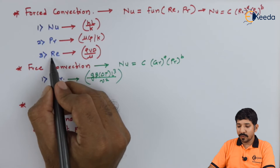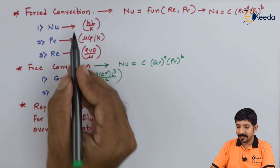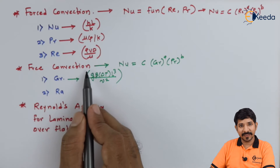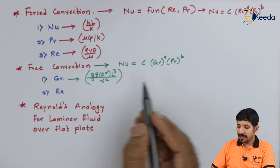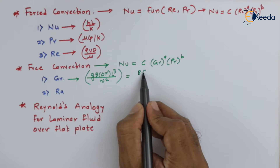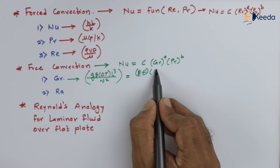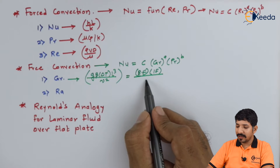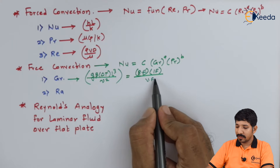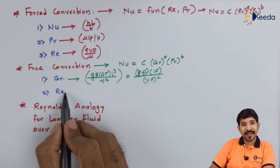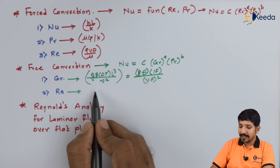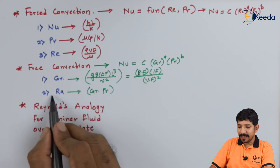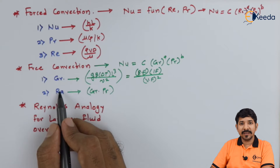The Grashof number represents the ratio of buoyant force and inertial force to the square of viscous force. Then we discussed the Rayleigh number, which is the product of Grashof number and Prandtl number, introduced for simplicity in analysis.